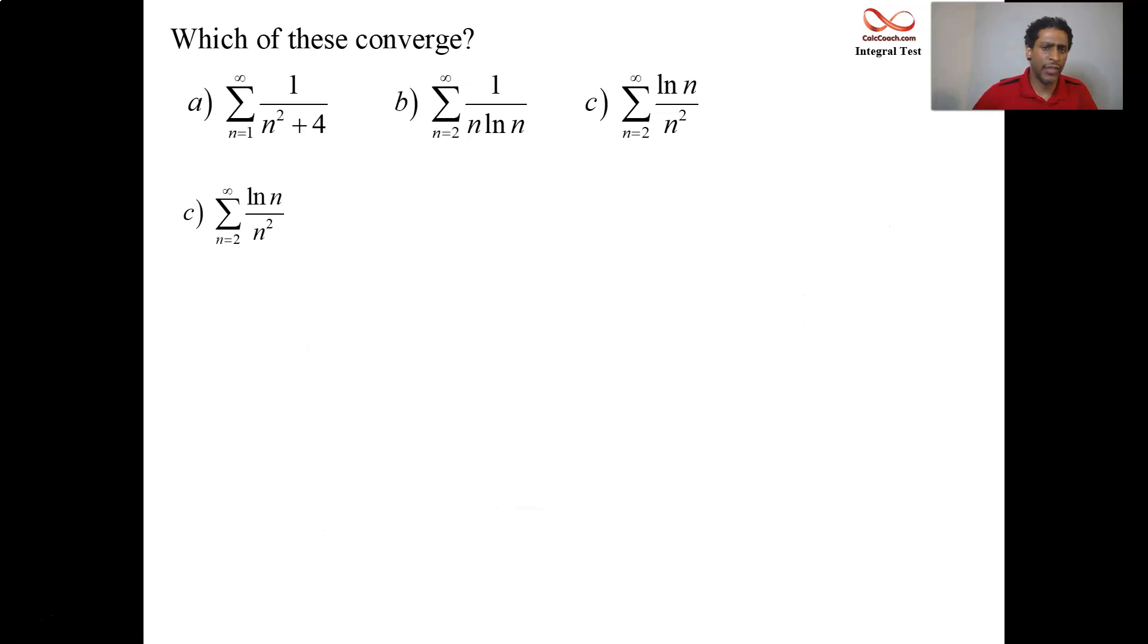The third one: ln of n over n squared. Replace the n's with x's. We have ln x over x squared. It's continuous. It's positive. It's decreasing, but not right away. Not when x is 2. It won't have to get to x equals 3 or more.